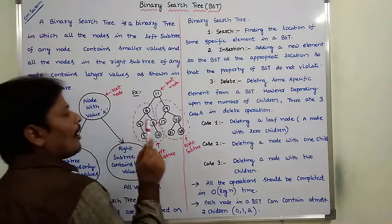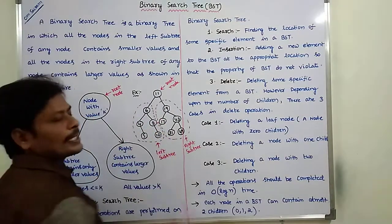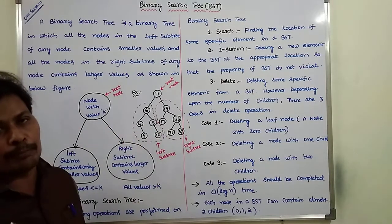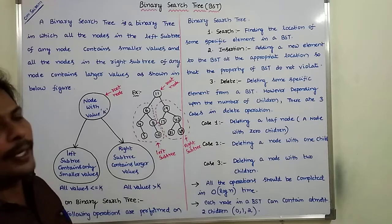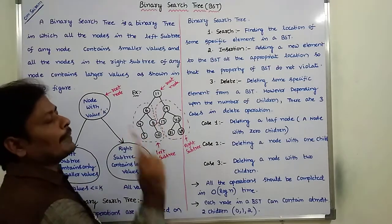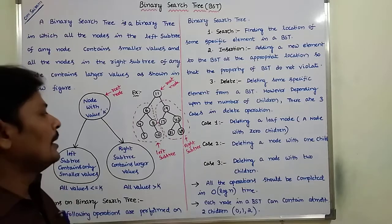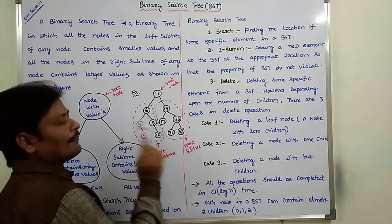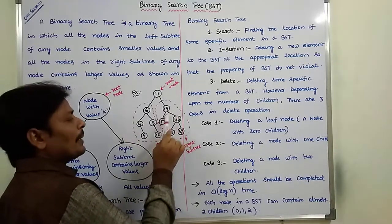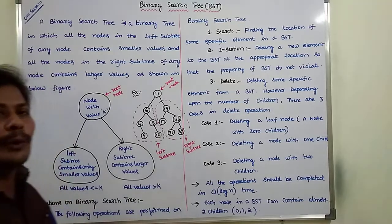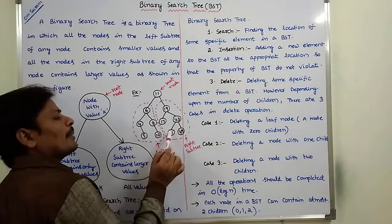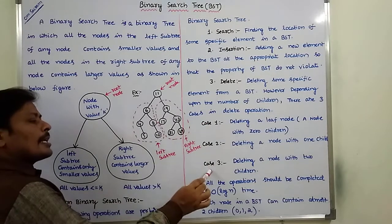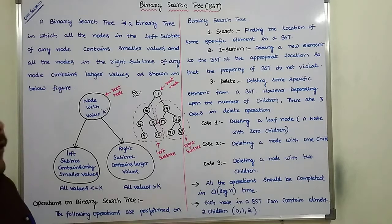So using in-order predecessor, 19 can be replaced with 17 because 17 is the maximum element in the left subtree of node 19. Using in-order successor, 19 can be replaced with 31 because it is the minimum element in the right subtree of node 19. So these are the three cases we perform in the delete operation.